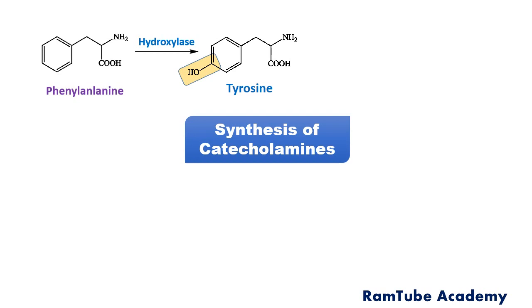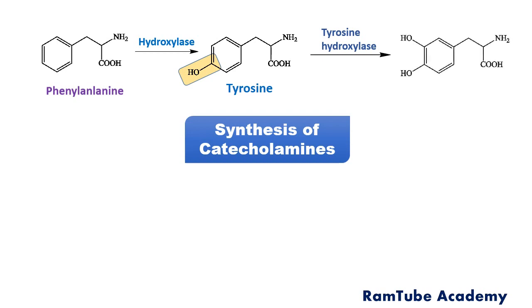Then tyrosine undergoes a reaction in the presence of the enzyme tyrosine hydroxylase and forms DOPA — that is, dihydroxyphenylalanine. During this reaction, one hydroxyl group is added at one of the meta positions.